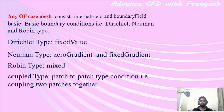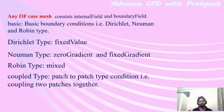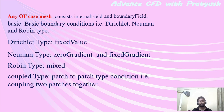The boundary fields need to be specified before using the solver. Generally, the boundary field is available in the zero folder. In any test case there are three folders: zero, constant, and system. Whatever boundary conditions are available, you specify them in the zero folder. For internal fields we use the solver, and for the boundary field we derive our own boundary conditions. There are different kinds of boundary conditions available in OpenFOAM — like basic boundary conditions.